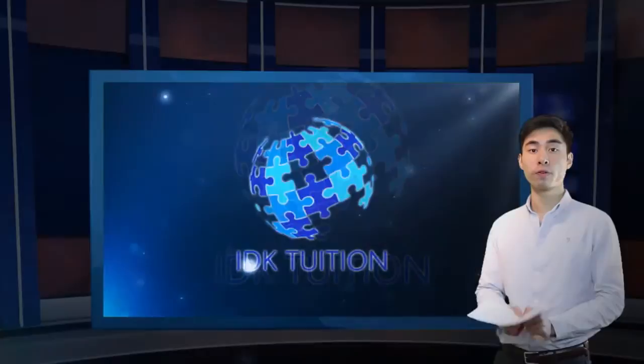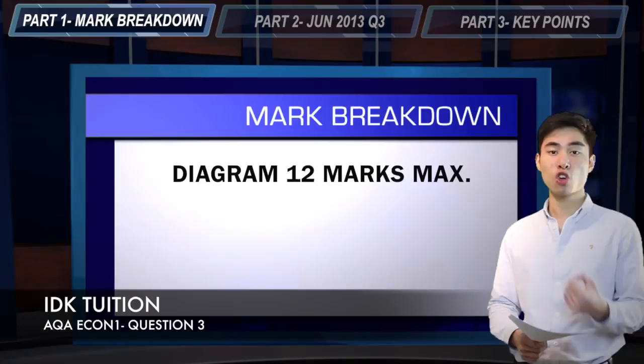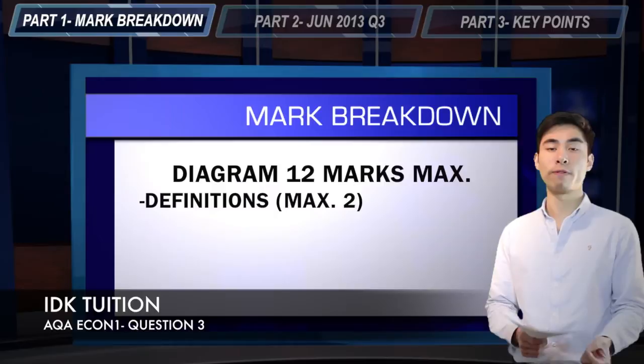On the AQA Unit 1 paper, your third question is going to be the 12-mark diagram question. Remember, there's always going to be more than one way to obtain a full mark allocation. So if you take a look at the mark scheme, there's going to be two marks on offer for including relevant definitions.